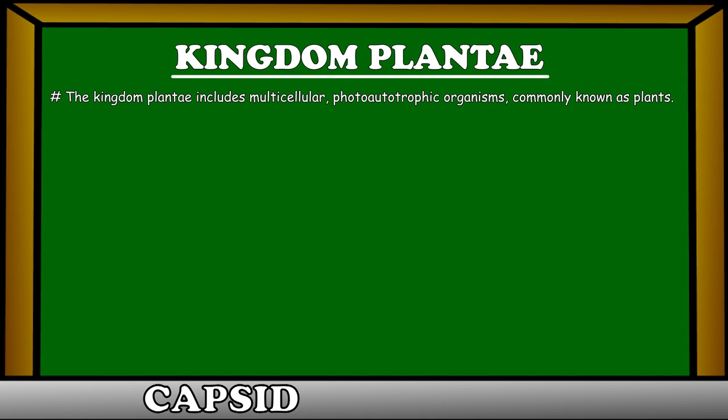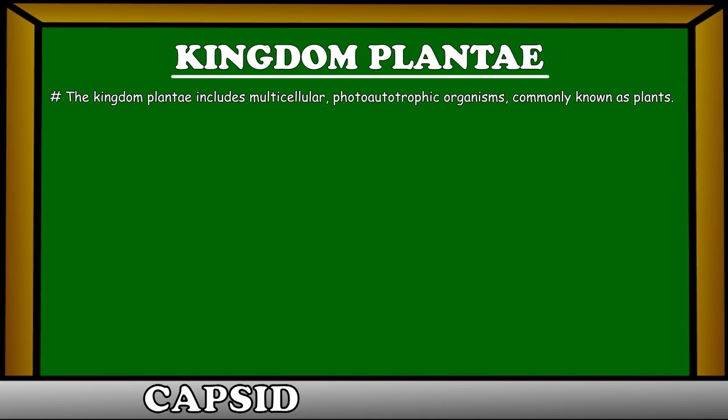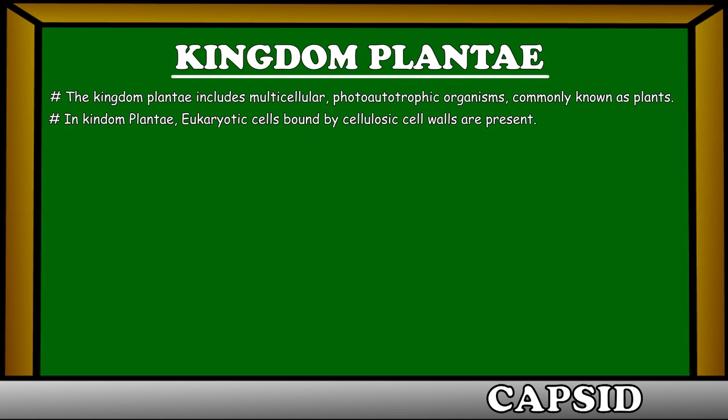Today we will talk about the Kingdom Plantae. The Kingdom Plantae includes multicellular, photo-autotrophic organisms, commonly known as plants. In Kingdom Plantae, eukaryotic cells bound by cellulosic cell walls are present.